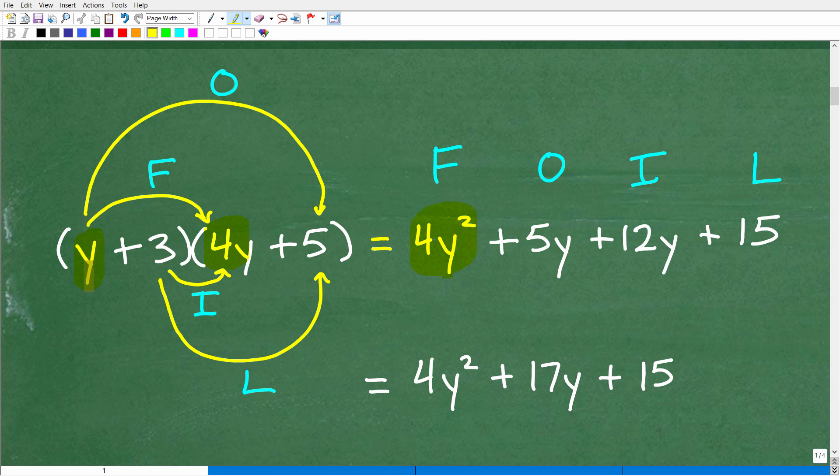Now, what about the outer? Well, that would be y times what? That would be y times 5. Of course, that would be 5 times y or 5y. That's the result of our outer.